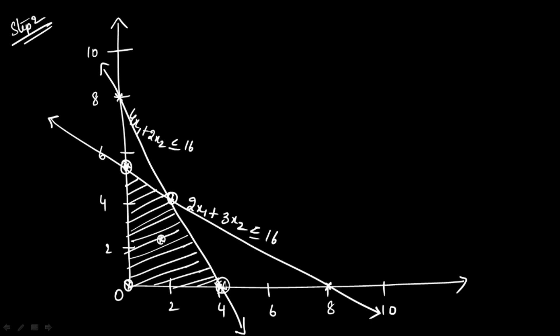At the same level, a point further out is always better than one closer in, so we always take the extreme points. The four extreme points are (0,0), (0, 5.33), (4, 0), and the intersection of both equations which we still need to find.